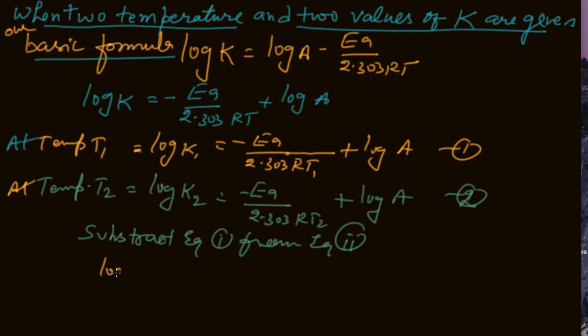Final formula will come here: log K2 by K1 equals Ea upon 2.303 R times (1 by T1 minus 1 by T2). This is the final formula.